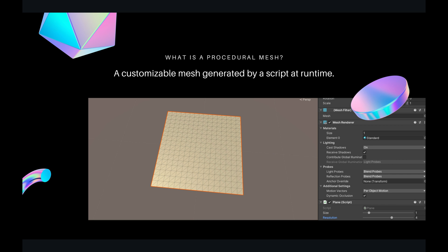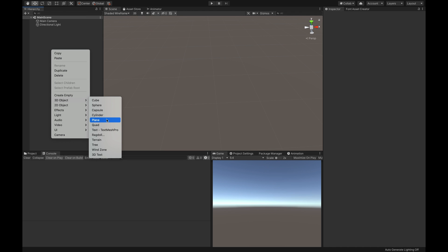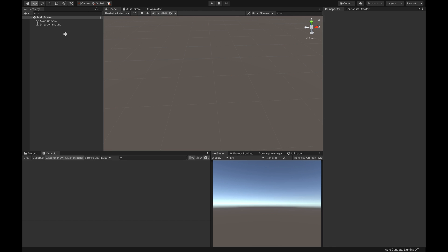It means that I'm using a script — in this case called 'plane' — to generate a mesh that has particular details. In this case I want a high-resolution mesh. As you can see, this is a high-resolution mesh, because if you use the standard plane in Unity you will have only four vertices, whereas here we have multiple vertices.